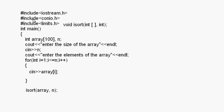Here is the program: we include iostream.h, conio.h, and limits.h — the header file needed for INT_MIN. The function prototype is void isort(int array, int n). In the main method, declare the array, take its size, and input elements starting from index 1 using a for loop from i equal to 1 to n. Then call the isort function.